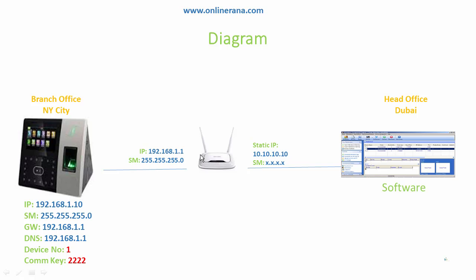The internal LAN router IP is 192.168.1.1, and when I access the static IP — say 10.10.10.10 or whatever you have — in my software, the router will forward that port to the internal IP 192.168.1.10, which is the IP of the biometric machine. So the router forwards the external port request directly to that machine.